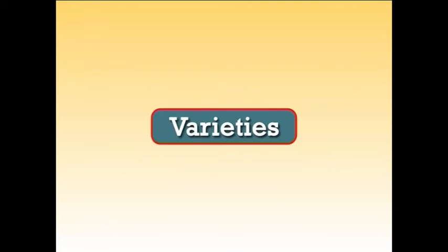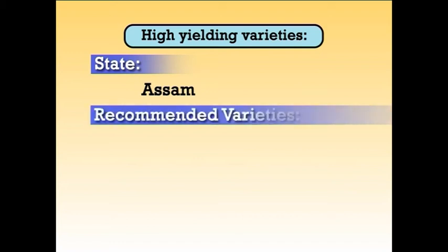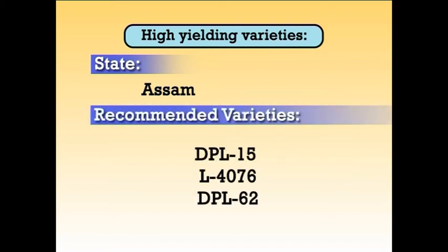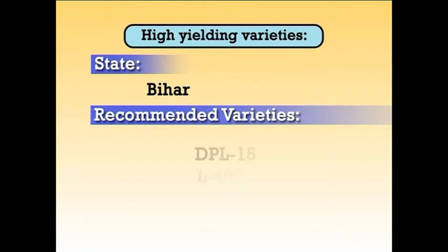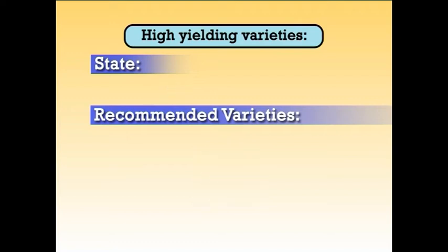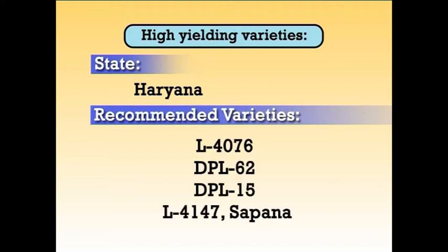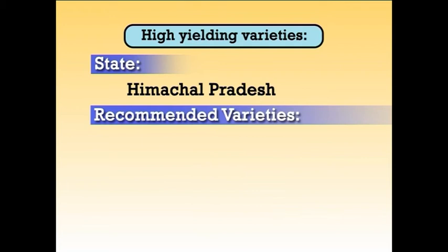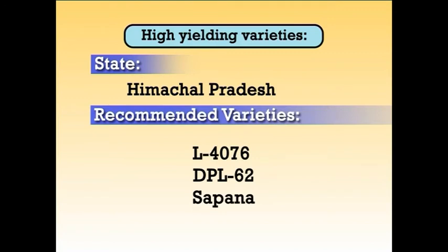High yielding varieties of lentil recommended for cultivation in different states: for Assam — DPL 15, L4076 and DPL 62; for Bihar — DPL 15, L4076 and L4; for Haryana — L4076, DPL 62, DPL 15, L4147 and Sapna; for Himachal Pradesh — L4076, DPL 62 and Sapna.